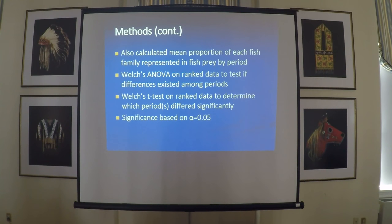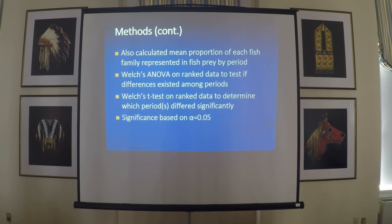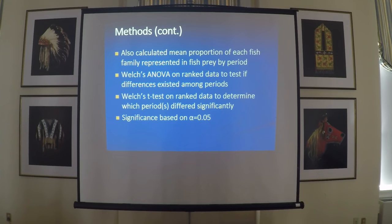We also calculated the mean proportion by number of each fish family within the fish prey group, because we were interested in seeing if the different components of the fish prey changed with the overall abundance of the fish community. Because our data were not normally distributed or had equal variances or equal sample sizes, we used a Welch's ANOVA on rank data to look for differences between periods, and then a Welch's t-test on rank data to determine which periods differed. Significance was based on alpha 0.05.